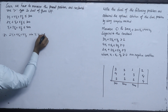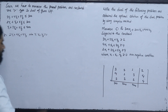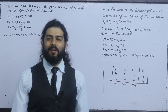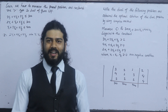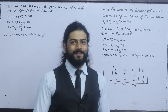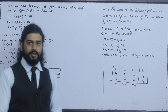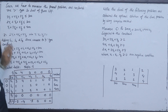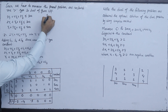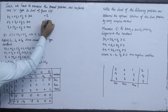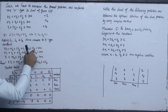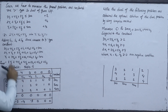Variables y1, y2, y3 are greater than or equal to 0. We introduce slack variables s1, s2, s3. The first constraint becomes 3y1 plus 4y2 plus 2y3 plus s1 plus 0·s2 plus 0·s3.